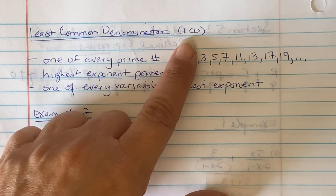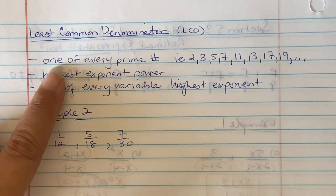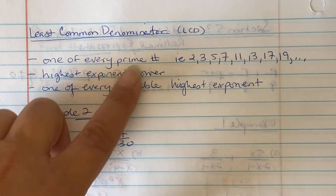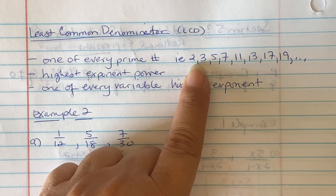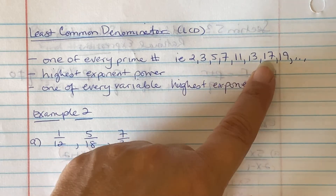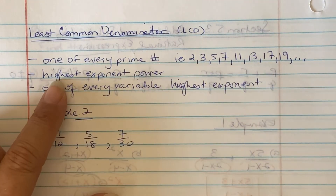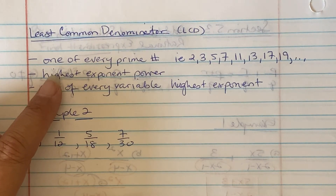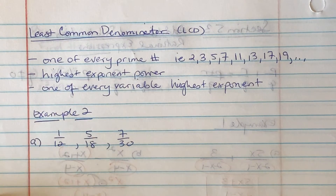The least common denominator, or LCD: for the LCD, you use one of every prime number — for example, 2, 3, 5, 7, 11, 13, 17, 19, and so on. It's the highest exponent power you see of each of those prime numbers, and then one of every variable with the highest exponent given.